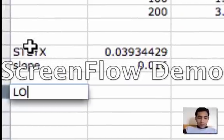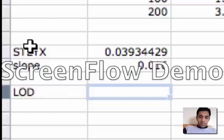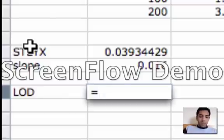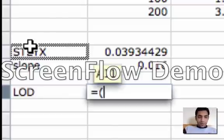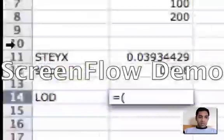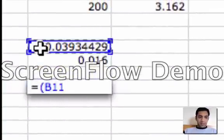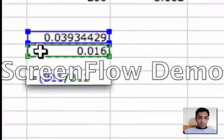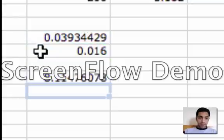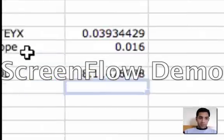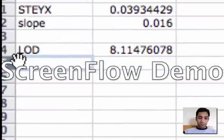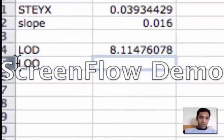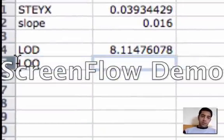So for limit of detection, the formula is equal to the value of STEYX over slope times 3.3. This is your limit of detection.